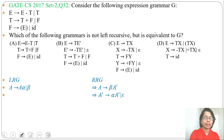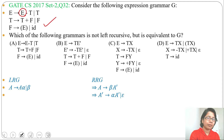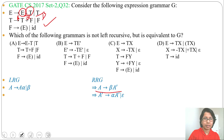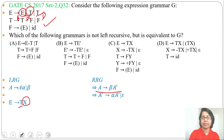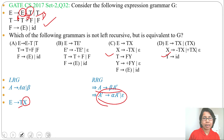Now apply this formula. The production E derives E minus T or T is left recursive, with E as A, minus T as alpha, and T as beta. So E derives beta A-dash, which becomes E derives T X, where X is the new variable. Then X derives alpha X or epsilon, which becomes X derives minus T X or epsilon.